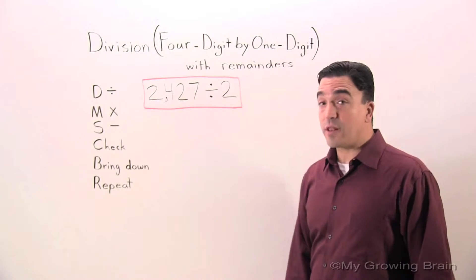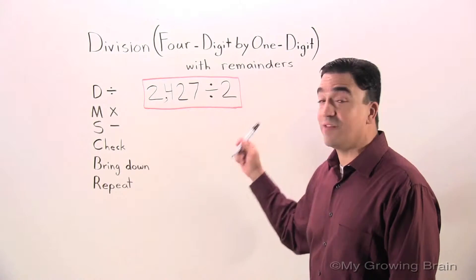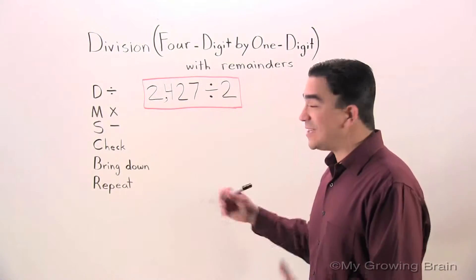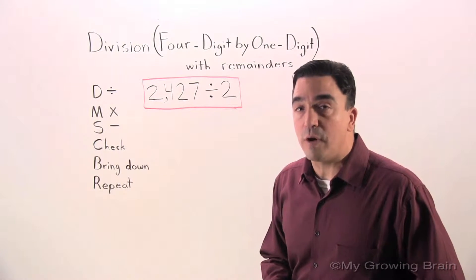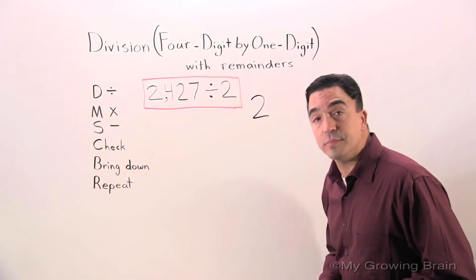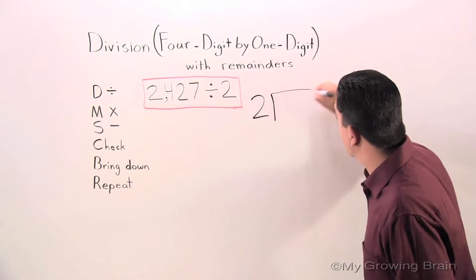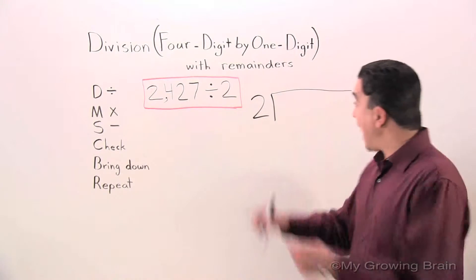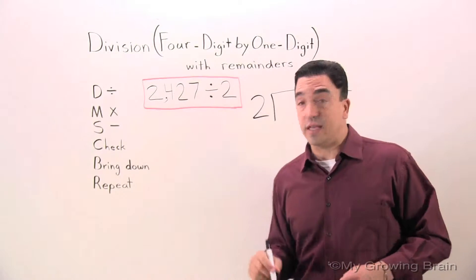As you can see on the board, I wrote 2,427 divided by two, but I need to change it into a more workable format. So I'm going to start with the divisor 2, then I'm going to make a bracket, and inside the bracket I'll put the dividend.